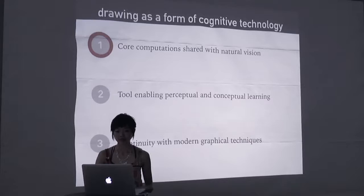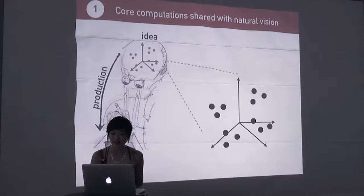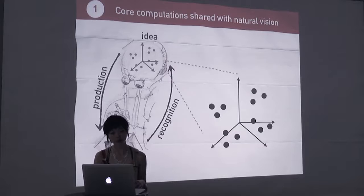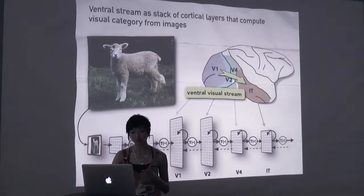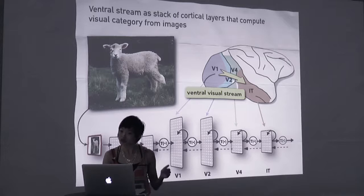First up, natural vision. So what underlies our ability to place strokes on the page, what I'm going to call visual production, such that someone can recognize what we're trying to convey? To gain traction on this question, we began with the premise that visual production and its complement, visual recognition, are linked through some common internal substrate. We hypothesized that a good candidate for this common substrate might be one we already know to represent visual information at a fairly abstract level.